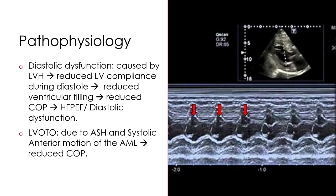On the other hand, left ventricular outflow tract obstruction is caused by asymmetrical septal hypertrophy and the pathological hemodynamically driven systolic anterior motion of the anterior mitral leaflet. In the illustration presented here, you can see how the anterior mitral leaflet moves paradoxically during systole to obstruct the left ventricular outflow tract.